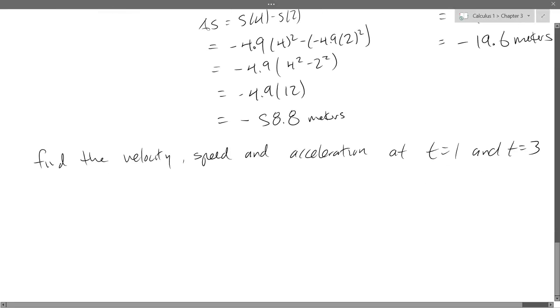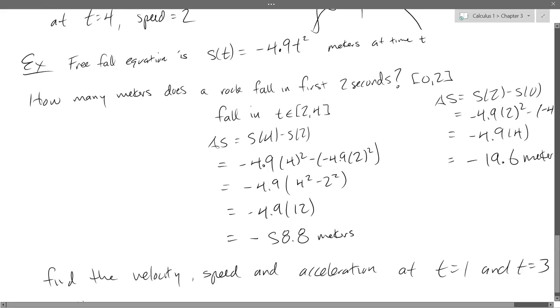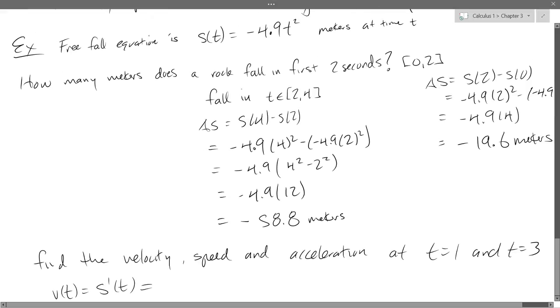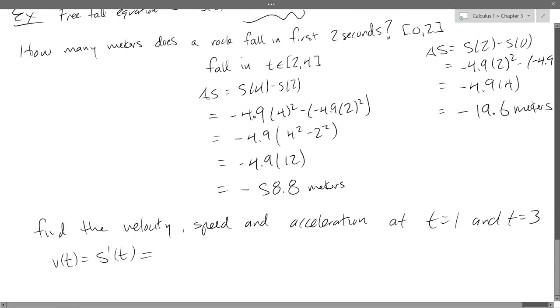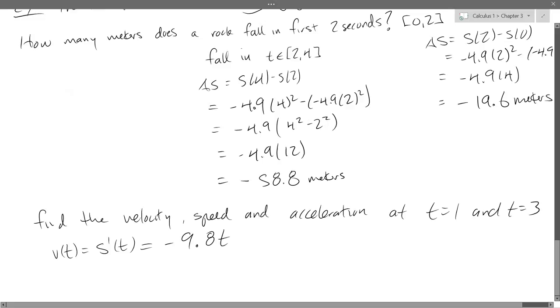We're gonna do it at time 1 and time 3. So after 1 second, after 3 seconds. Velocity is the derivative of the position function which is s of t. So it's s prime of t. This function is relatively easy to take a derivative. I'm looking right up here. So I'm going to bring the 2 down as a coefficient. So 2 times negative 4.9 is negative 9.8 t. So that is our velocity function.